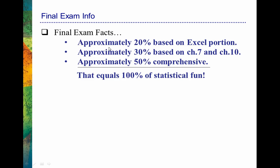About 20% of the exam will be based on Excel, and I've given you that information already in class. Then about 30% of the information will be based on new stuff — that's Chapter 7, where we covered correlations, and Chapter 10, where we covered chi-square analyses. The rest of the exam, about half of it, will be comprehensive, meaning I'll ask you questions about other things that we've covered throughout the semester.